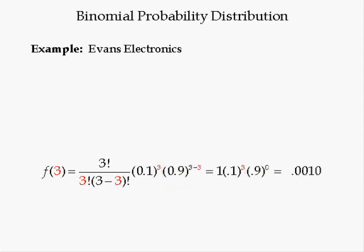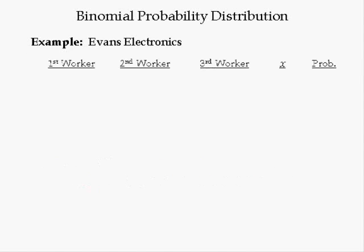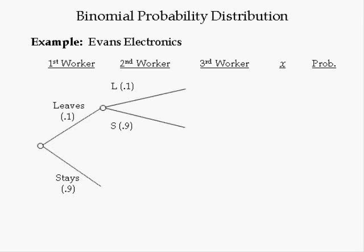The probability of three of the three people chosen at random leaving the company is 0.001. Outcomes of a binomial distribution can be diagrammed using a tree diagram. In stage 1, the first worker chosen can either stay or leave. Given the first worker will leave, the second worker can stay or leave. Given the first and second workers leave, the third worker can stay or leave. If all three workers leave the company, X equals 3. The probability of leave and leave and leave equals 0.1 times 0.1 times 0.1, which is equal to 0.0010 — the same number we computed using the binomial probability distribution function.